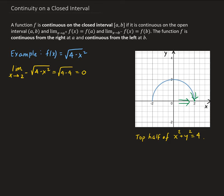Now let's look at the limit of our function as x approaches negative 2 from the right side. As x approaches negative 2 from the right, the corresponding y value is getting closer and closer to 0. We get square root of (4 minus 4), which is 0.